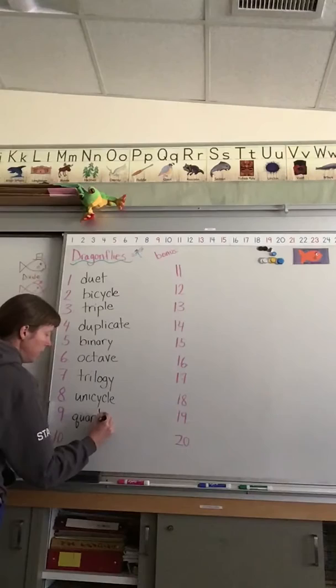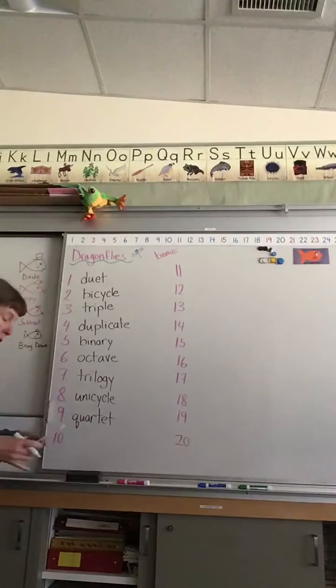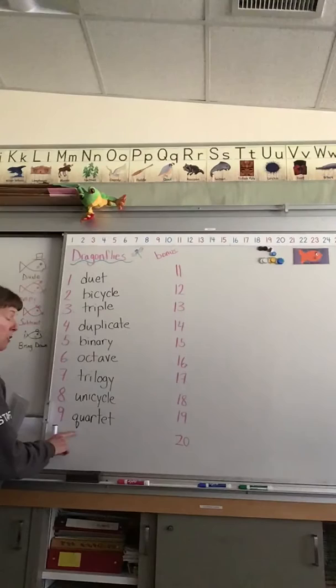Quartet. If you've got 'quad' of something like on a quad, it's got four wheels. A quartet is a musical group that has four people. Remember, Q's buddy in English, always, always, always, U comes after Q.